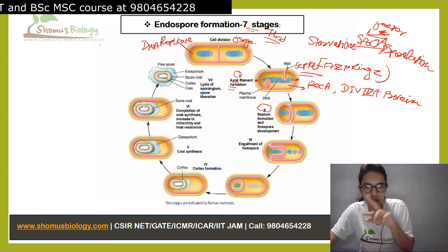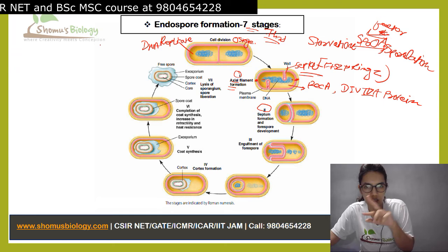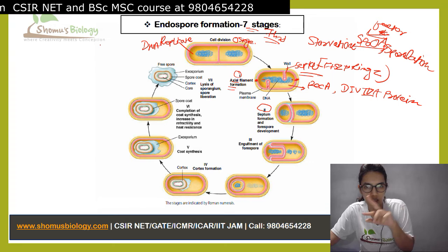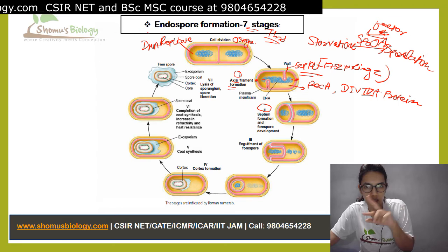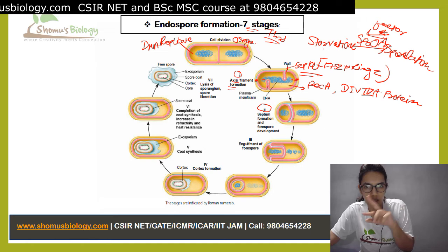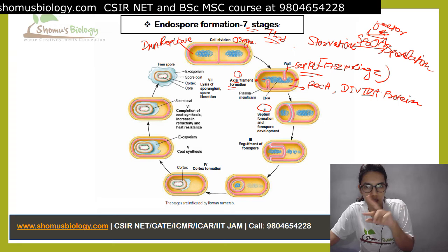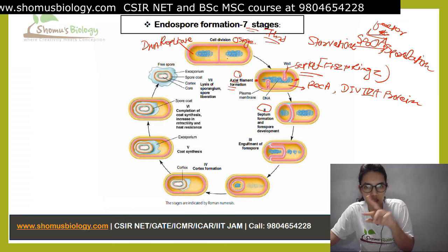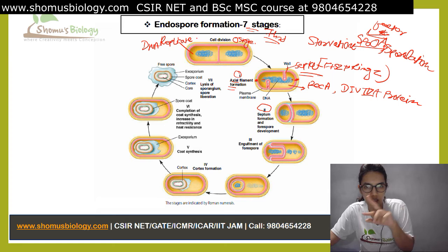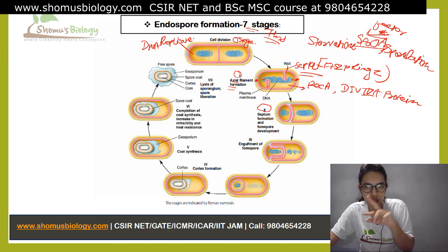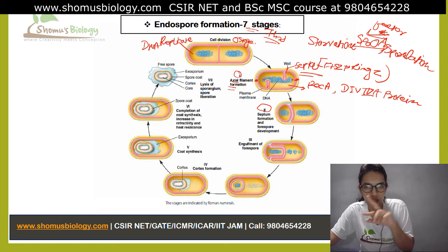When the environmental conditions go back to normal again, the spore will convert itself into the vegetative state again. For that, there are three stages. The transformation of a dormant spore into active vegetative cells is almost as complex a process as sporulation. The three steps are: activation, germination, and outgrowth.